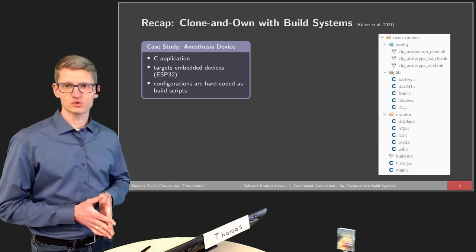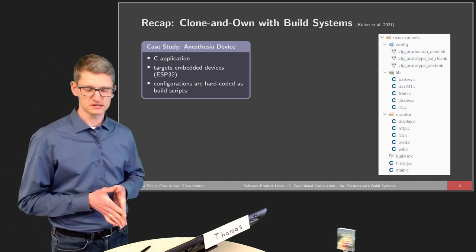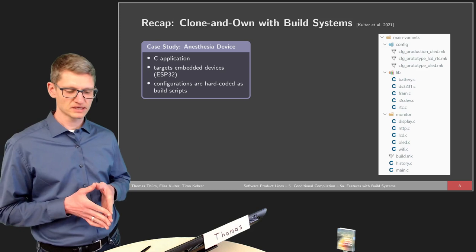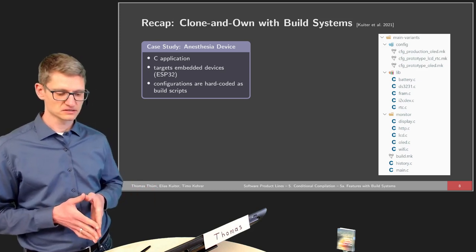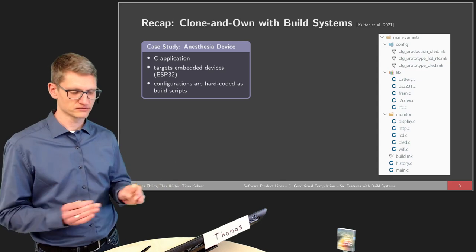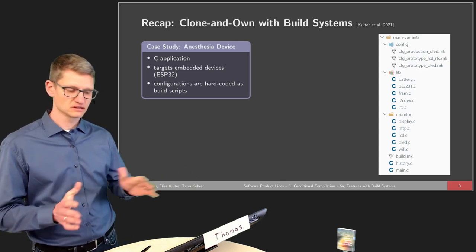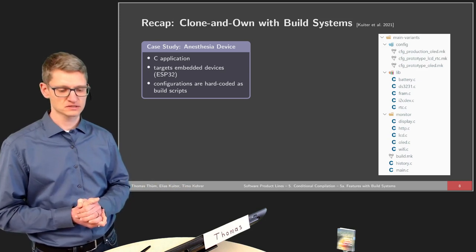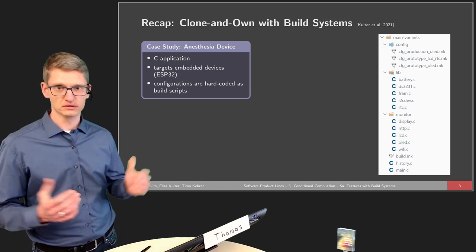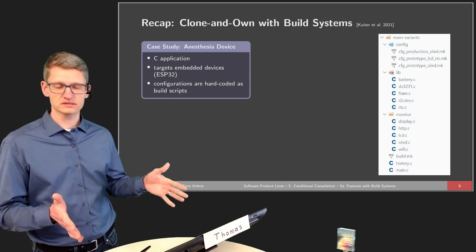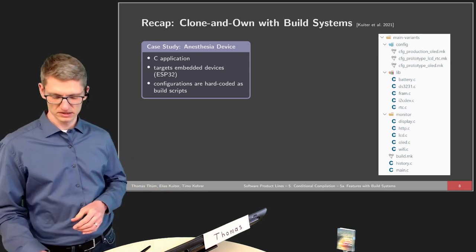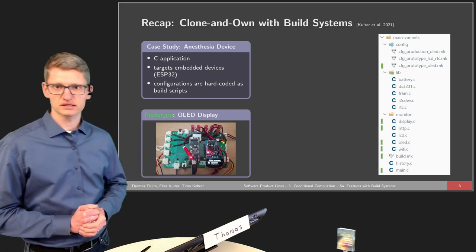There is a project built using clone and own with build systems. This is a small C application targeting embedded devices, where configurations are hard-coded as build scripts. It helps to end the life of certain animals required for medical reasons, adjusting the process so they don't experience pain. This is a small embedded device with hardware and software designed and implemented by Elias Küter. There are different products and different variants of the system.